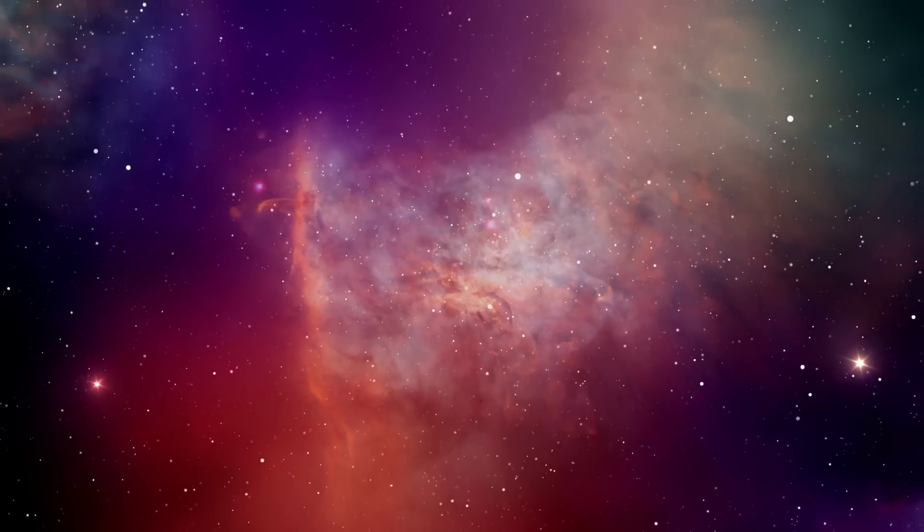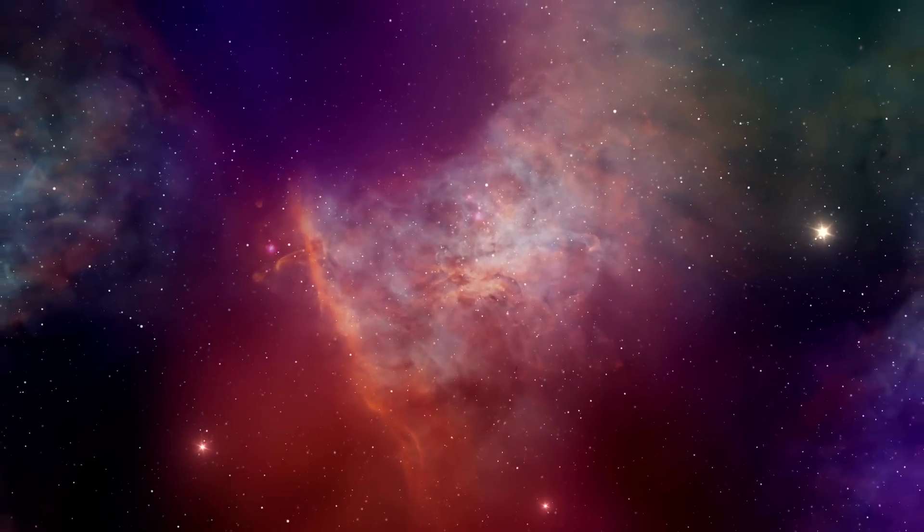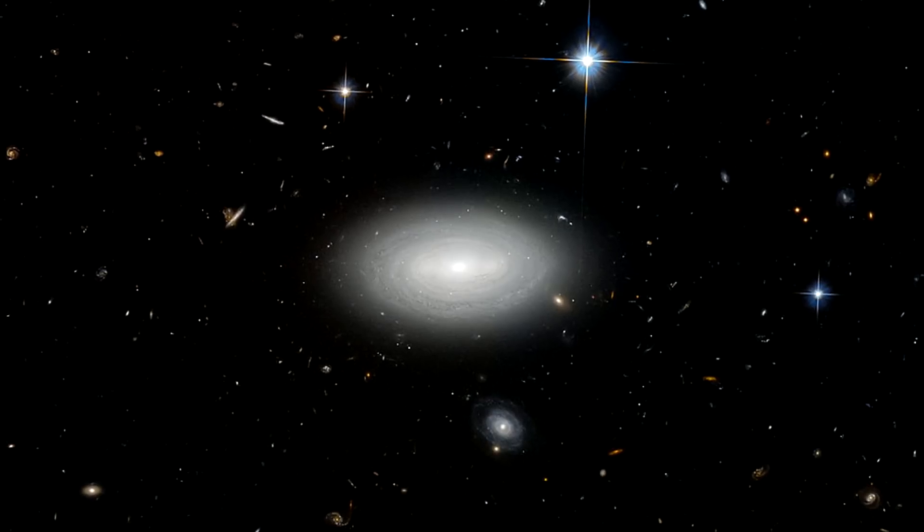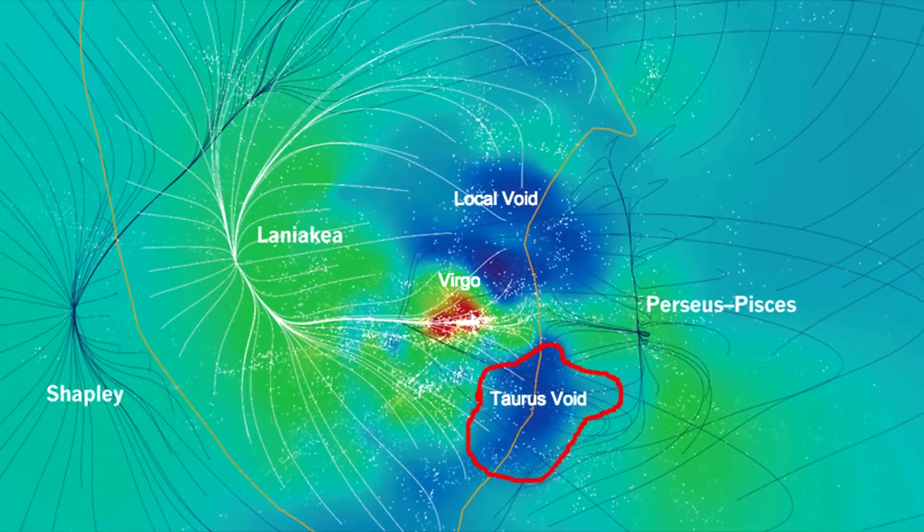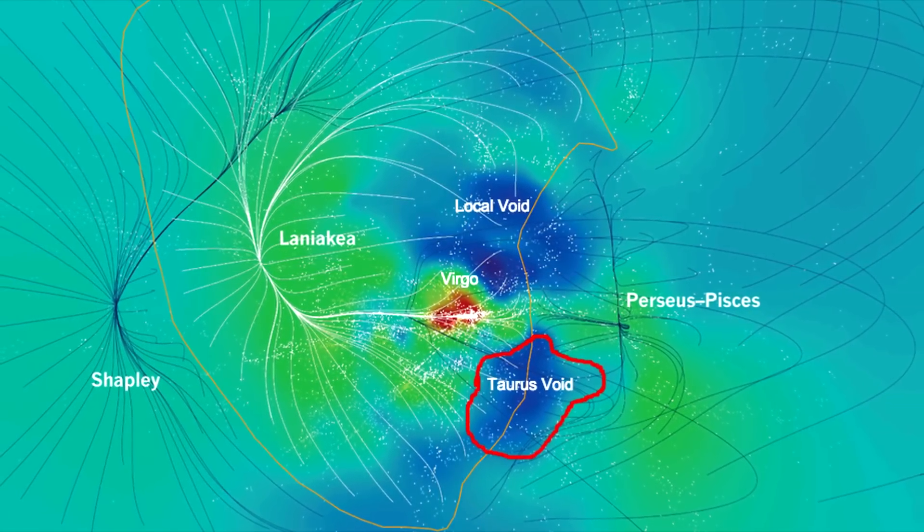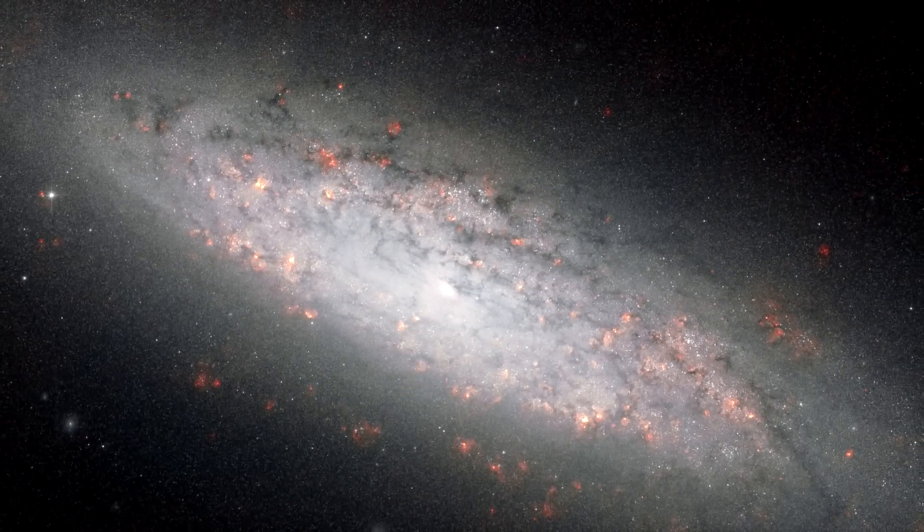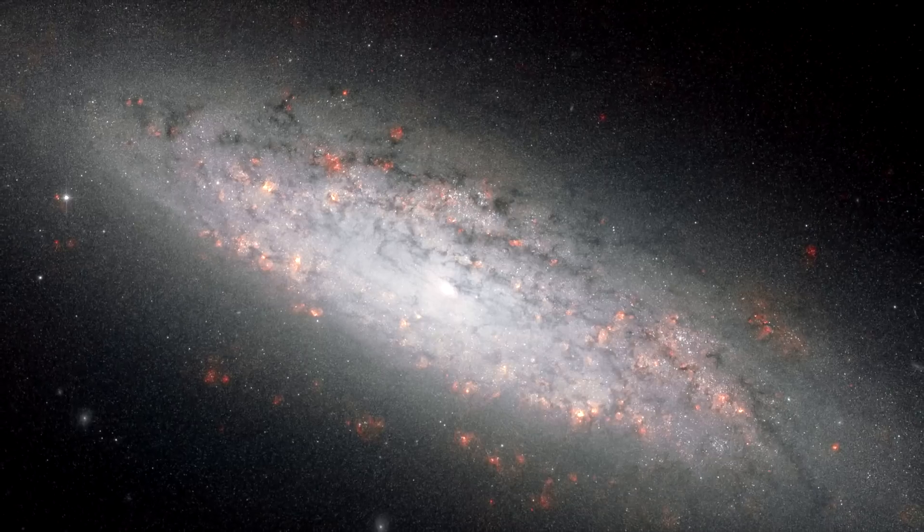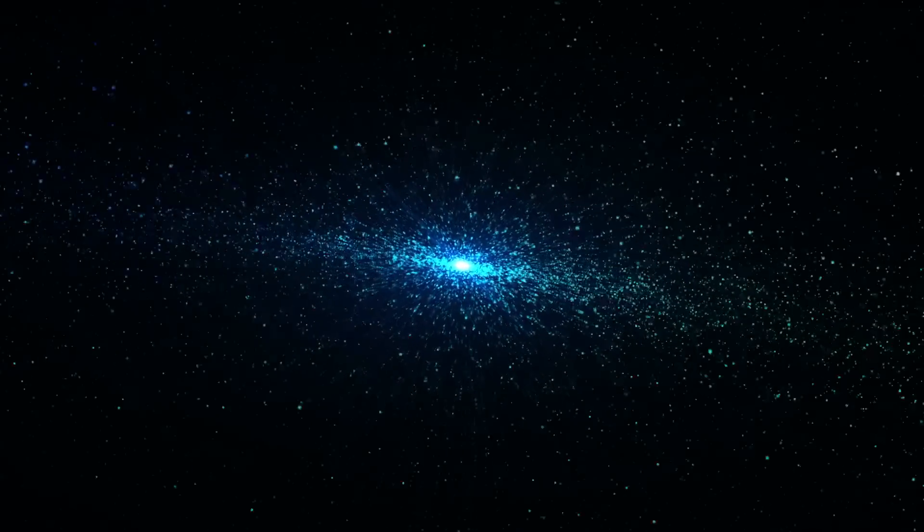The name Supervoid is slightly misleading though, in that it suggests that nothing exists in the vast 1.8 billion light year expanse, which is incredibly false. What scientists do actually say is that there are, in fact, quite a few cosmic objects in the expanse, but overall the area contains about 20% less mass than what exists in other parts of the universe.